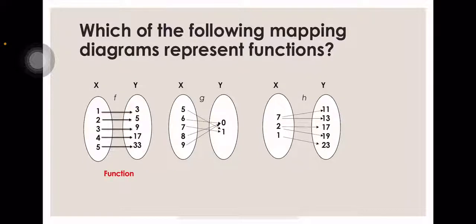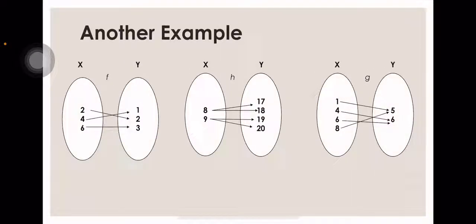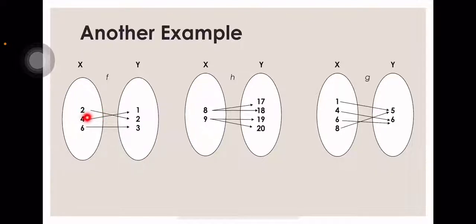So: function, function, not a function. Another example — in the first diagram, the X values are 2, 4, and 6. You can see it is 1-to-1, because the value of 2 in Y is just 2, the value of 4 in Y is 1, and the value of 6 in Y is 3. So this is a function.